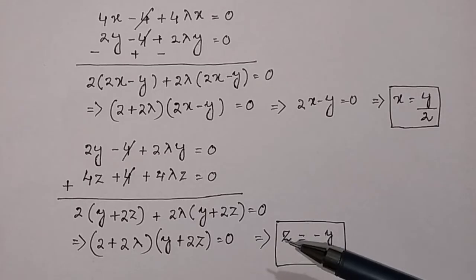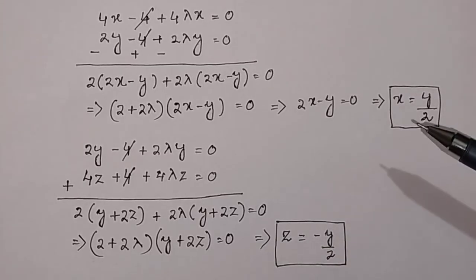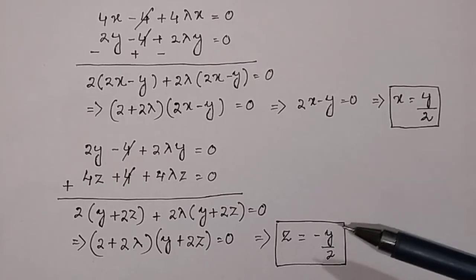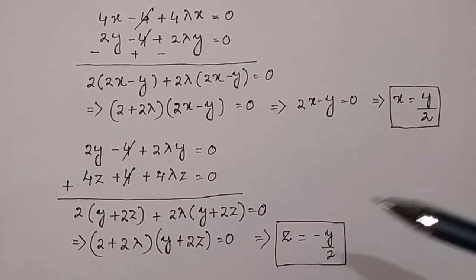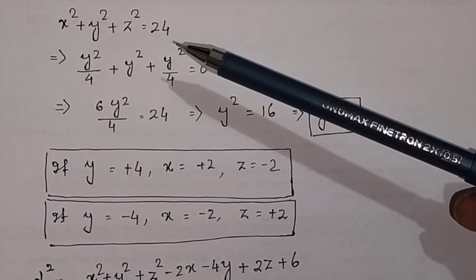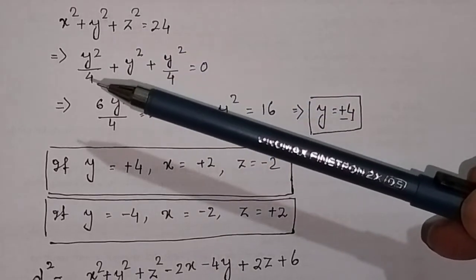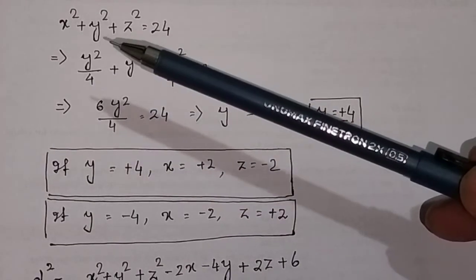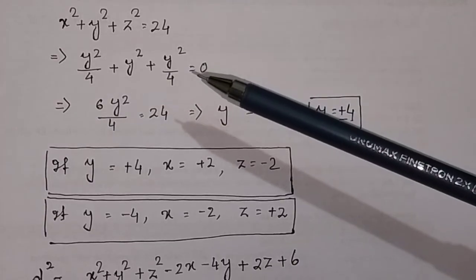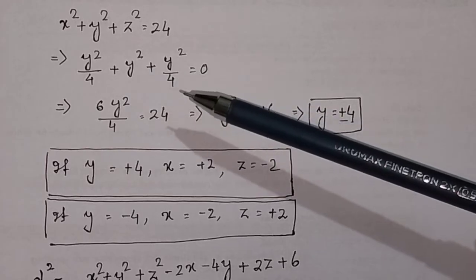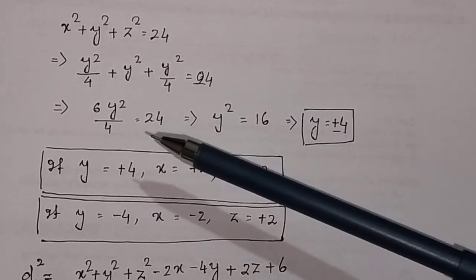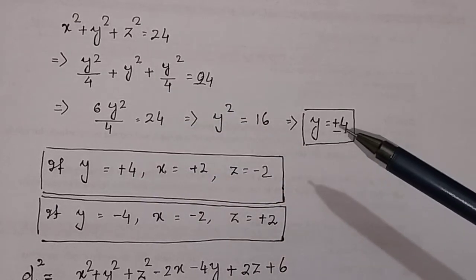With z = -y/2 and x = y/2, substitute into the constraint x² + y² + z² = 24. This gives y²/4 + y² + y²/4 = 24, which simplifies to 6y²/4 = 24, solving to y = ±4.